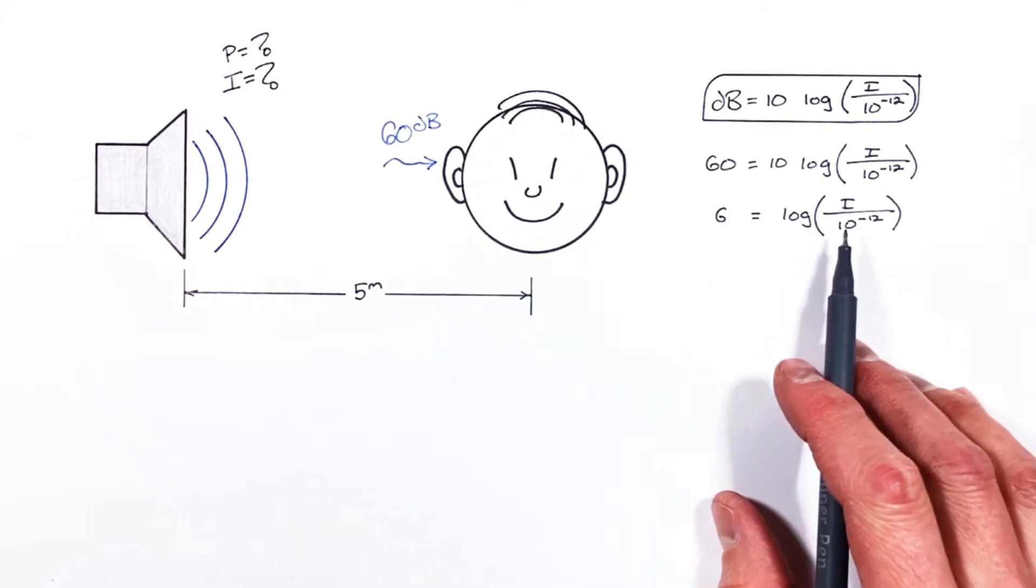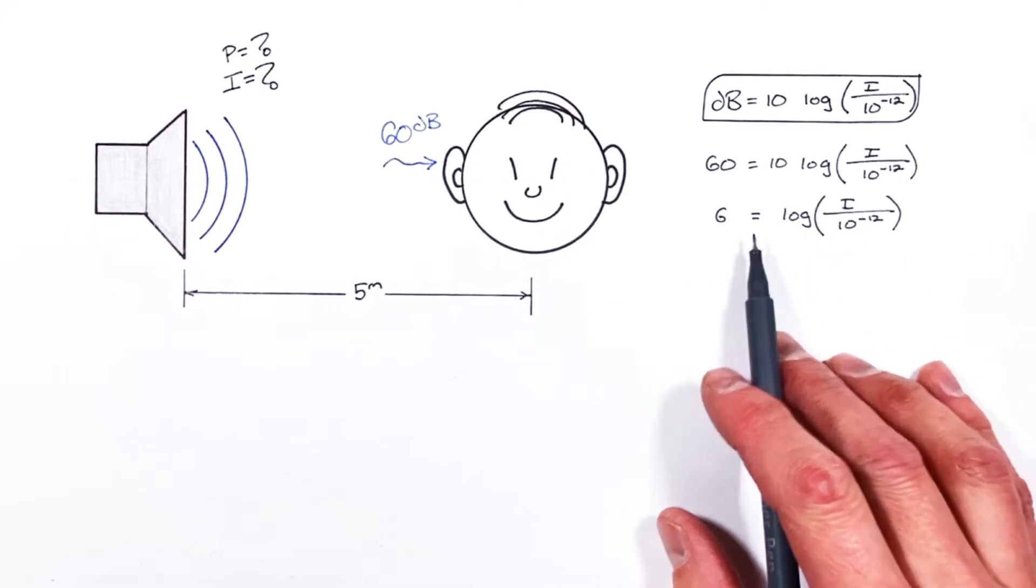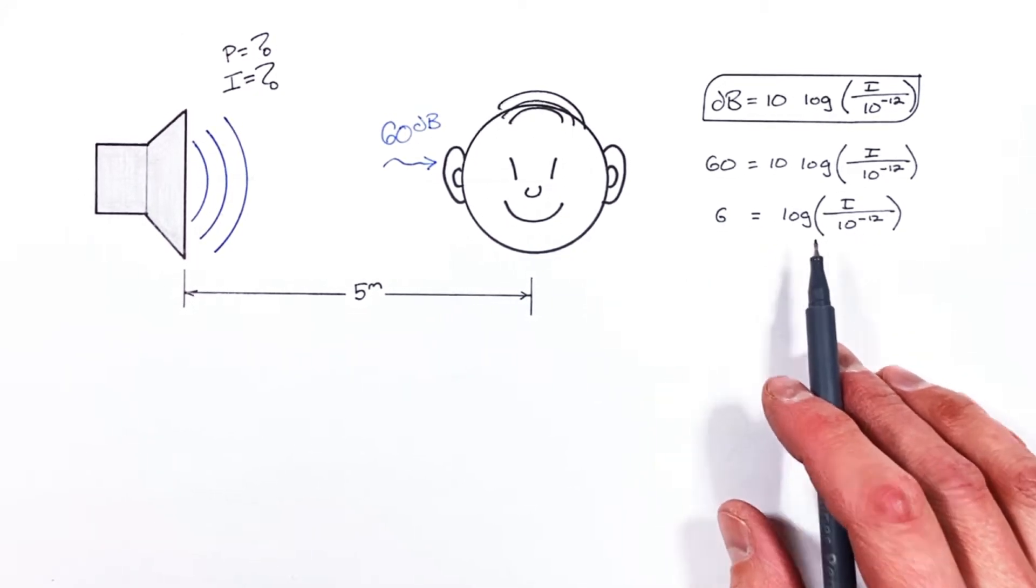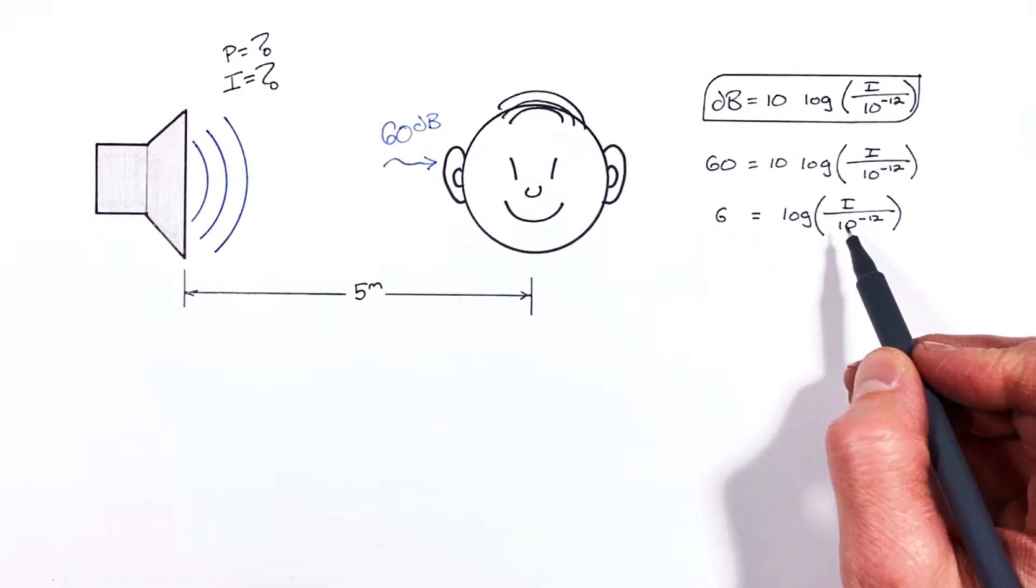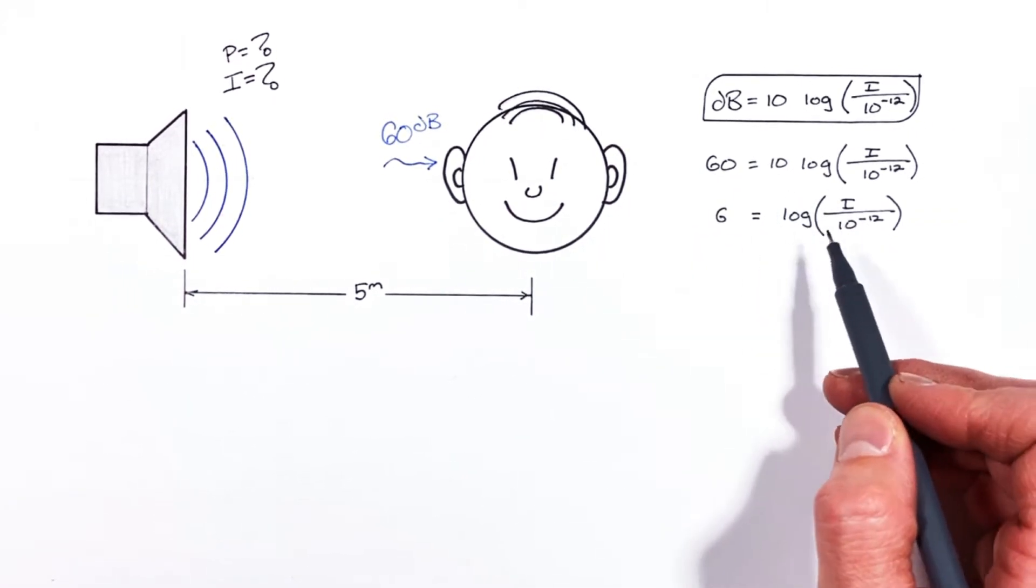Typically what happens when being asked to solve for the intensity here is people forget exactly where a log comes from. So to show you how to solve for this intensity I want to digress a little bit and show you exactly what a log is and where it comes from.